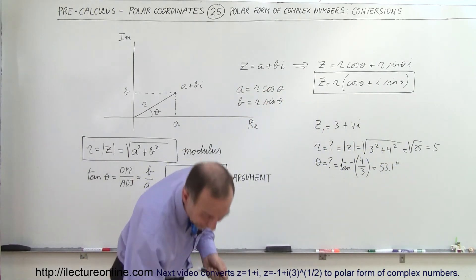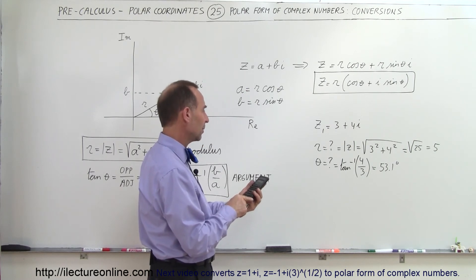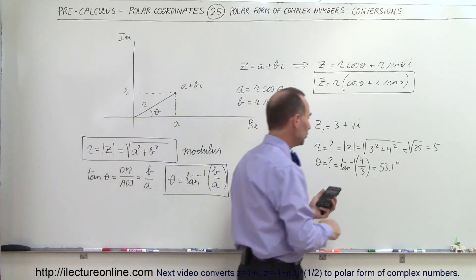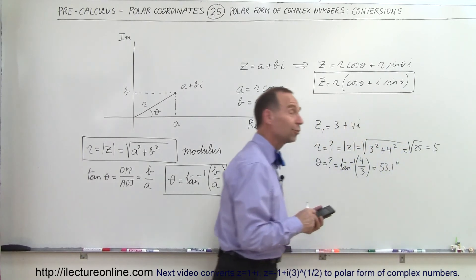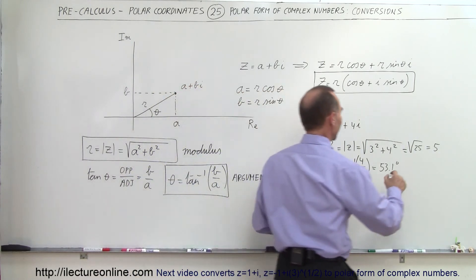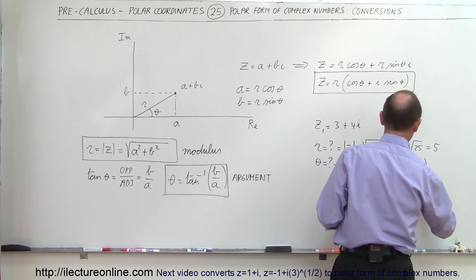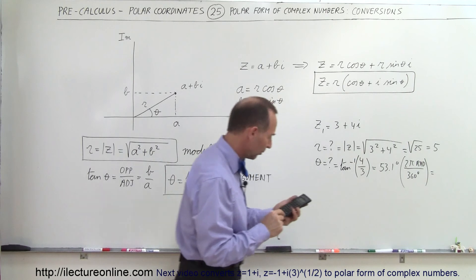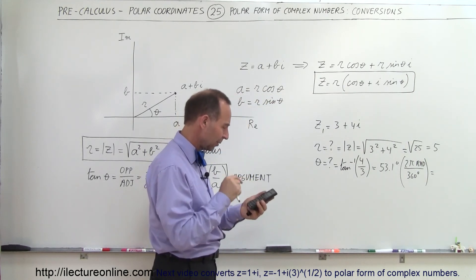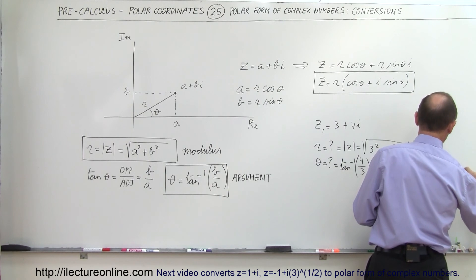If we want to convert that into radians, we take 53.1 degrees, divide by 360, and multiply by 2 times pi. So: arc tangent of 4 over 3, divided by 360, times 2 times pi equals 0.927 radians.